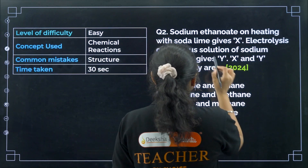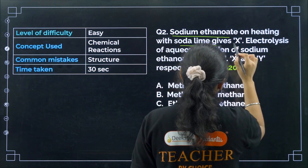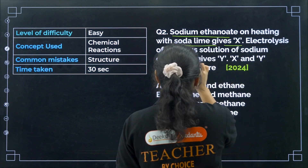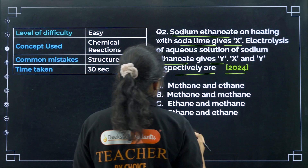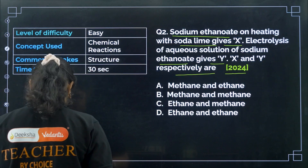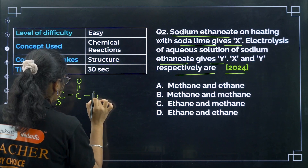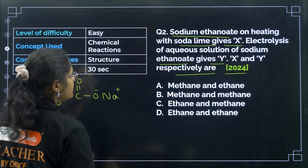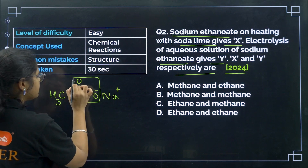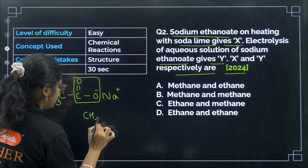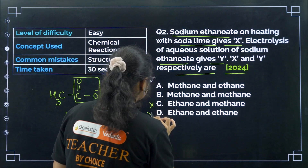Next question, also from 2024: sodium ethanoid (CH₃COO⁻Na⁺) on heating with soda lime gives X, and electrolysis of aqueous solution of sodium ethanoid gives Y. X and Y respectively are? Heating sodium ethanoid with soda lime removes CO₂, giving X = methane (CH₄). So we can eliminate options C and D.